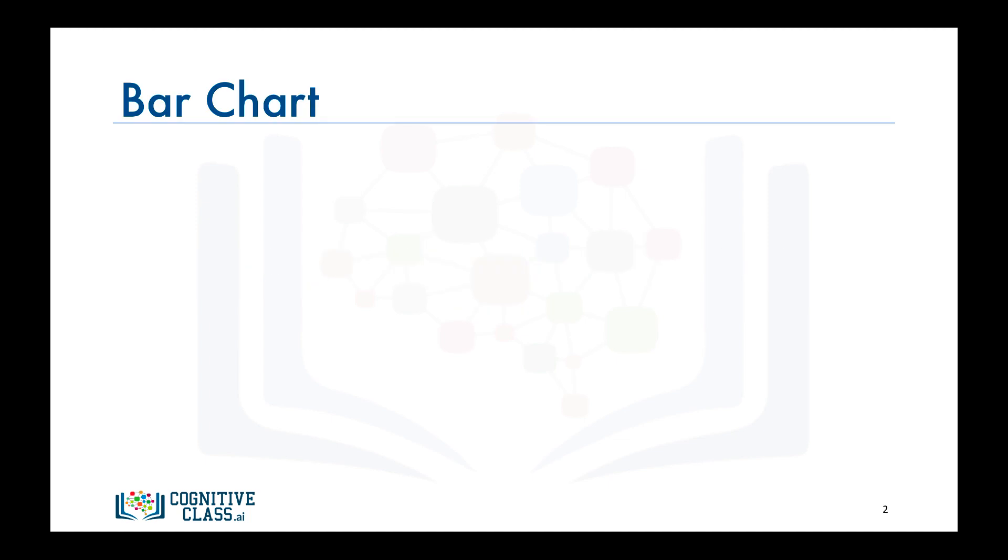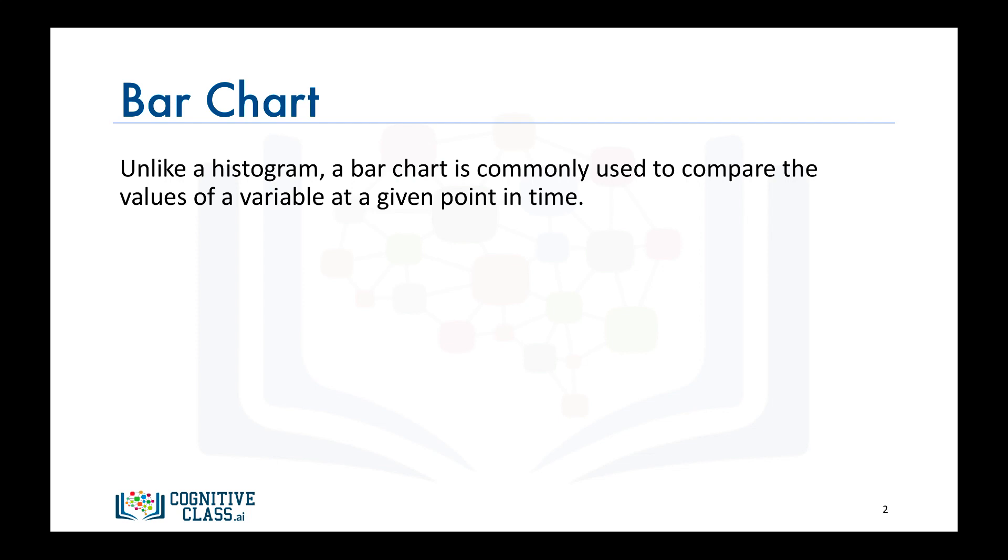A bar chart is a very popular visualization tool. Unlike a histogram, a bar chart, also known as a bar graph, is a type of plot where the length of each bar is proportional to the value of the item that it represents. It is commonly used to compare the values of a variable at a given point in time.